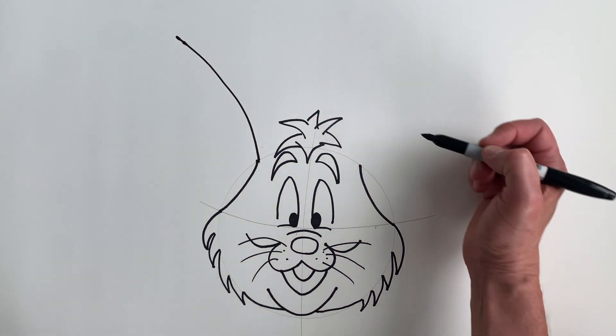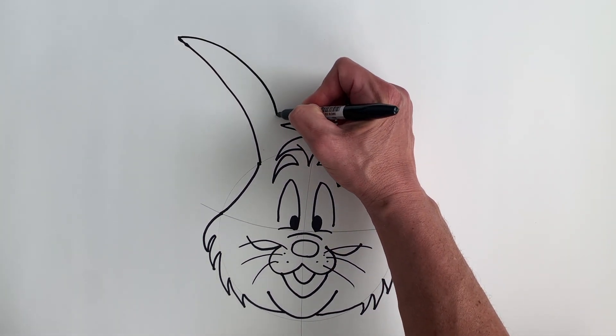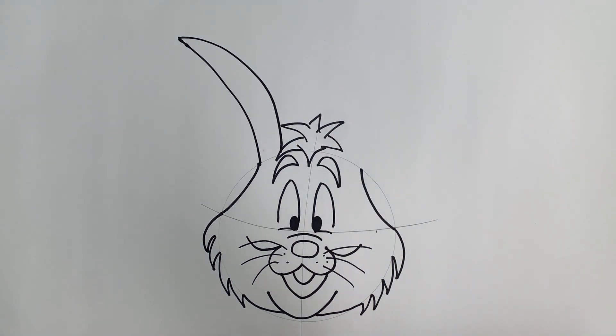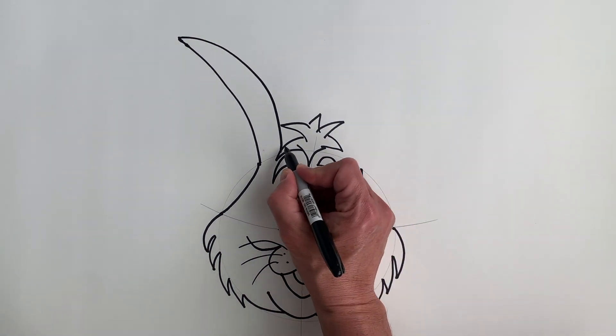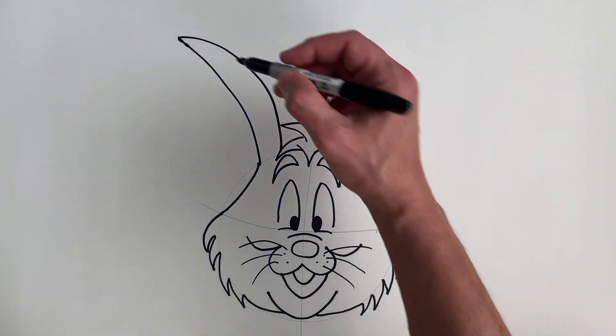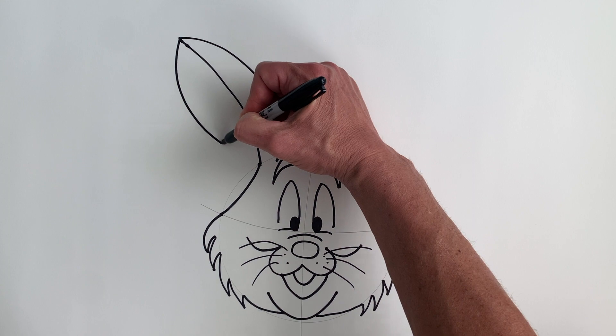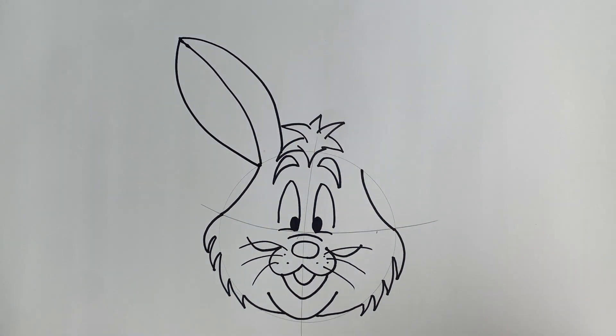Marker right on top there. Take it the same shape going all the way back down to where it kind of collides with his hair. Back up here, where they join. Curved line inside there.